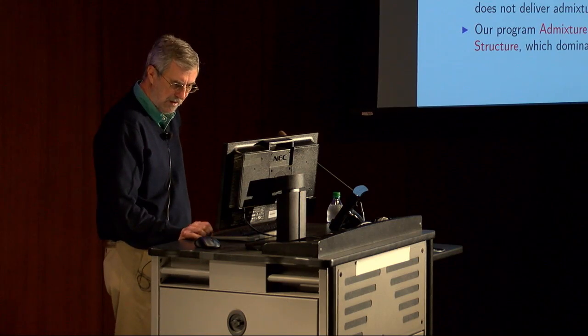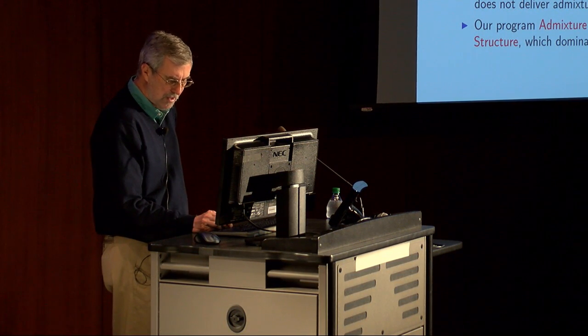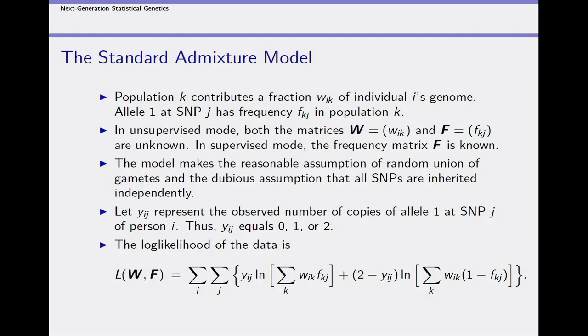The existing software was too slow, and the only alternative did not deliver the desired admixture fractions. So I set out with a graduate student, David Alexander, and we wrote a program called Admixture, which turns out to be much faster than the competition. You have a certain number of populations and two alleles — this is for SNP data. There are two kinds of parameters: the fractional contribution W_ik of individual i's genome coming from population k, and the frequency F_kj of the reference allele at SNP j in population k.